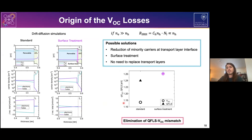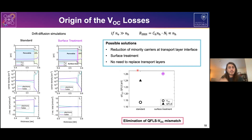Looking at the relation between quasi-Fermi level splitting and VOC in this simulated system, the reference devices have a limited VOC with a large quasi-Fermi level splitting VOC mismatch, whereas in the optimized device we end up with a much higher VOC that now matches the internal quasi-Fermi level splitting. This is all from simulation, but we used it as motivation to optimize our devices.